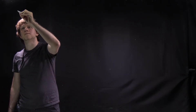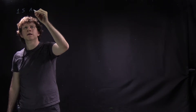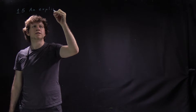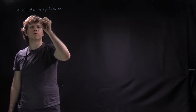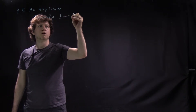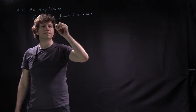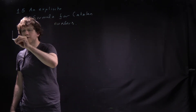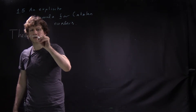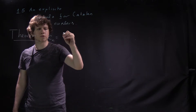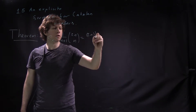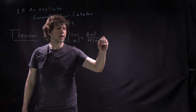In this lecture, I want to prove an explicit formula for Catalan numbers. That's lecture 1.6. The theorem we are going to prove is that C_n equals 1 over n+1 times (2n choose n), which is 2n factorial over n factorial times (n+1) factorial.